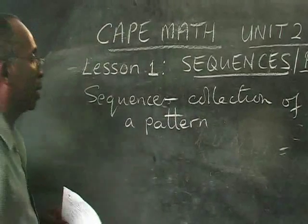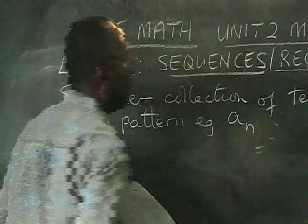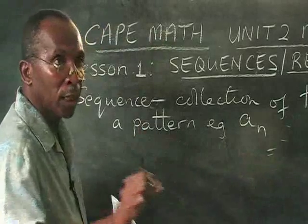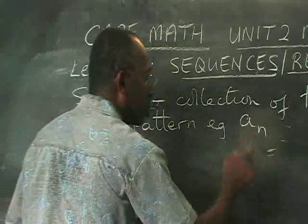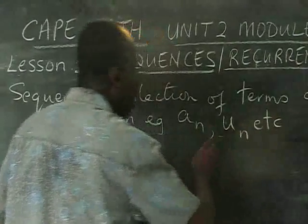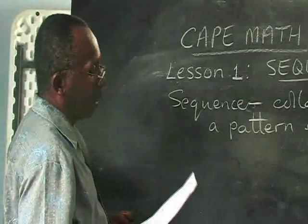So when we speak of a sequence, we can define a sequence, for example, as AN, which means we can have the term A1, A2, A3, so N can change, UN, etc. So we can have U1, U2, U3, because there are many terms in the sequence.